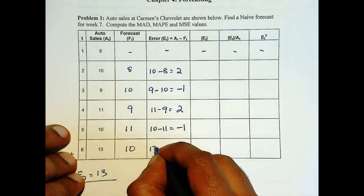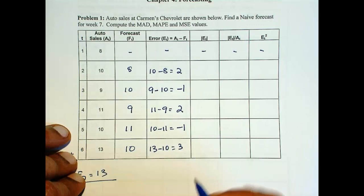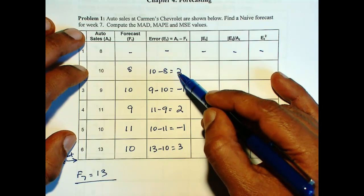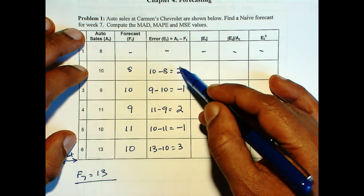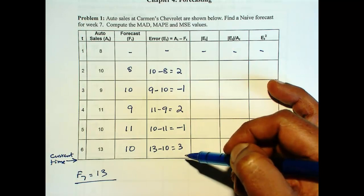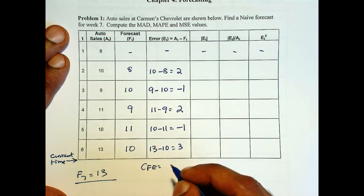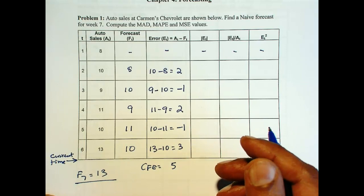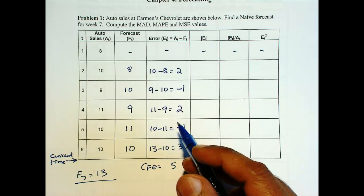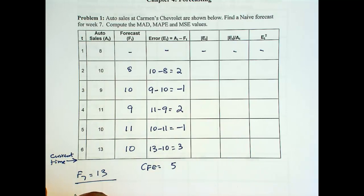Now the error can be both positive and negative. So when you add the errors in this fashion, some of the positive errors will cancel out some of the negative errors. So you expect this sum, this is CFE equals 5. You expect this sum to be close to 0. If it is not, then the forecast is said to be biased towards either the positive side or negative side. So cumulative forecast error, CFE, measures forecast bias.